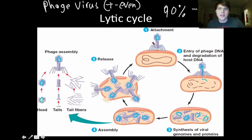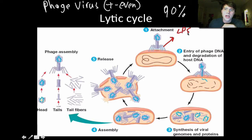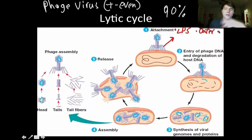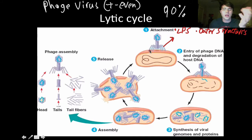Let's break down the lytic cycle. First is attachment — the filamentous structures are compatible with the lipopolysaccharides if the bacterium is gram-negative, or with any of the outer structures of the bacterial cell. Once it attaches and binds, that causes a conformational change.